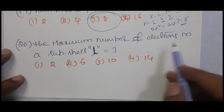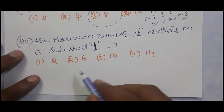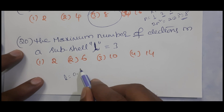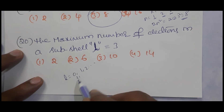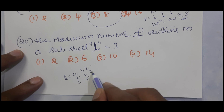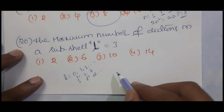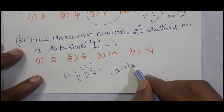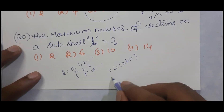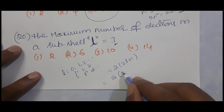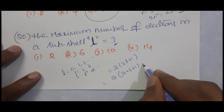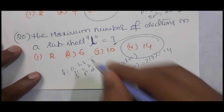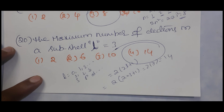Question 20: Maximum number of electrons present in a sub-shell with l = 3. Sub-shells are denoted by l = 0, 1, 2, 3 (s, p, d, f). The formula for maximum electrons in a sub-shell is 2(2l + 1). For l = 3: 2(2×3 + 1) = 2×7 = 14. So the answer is 14.